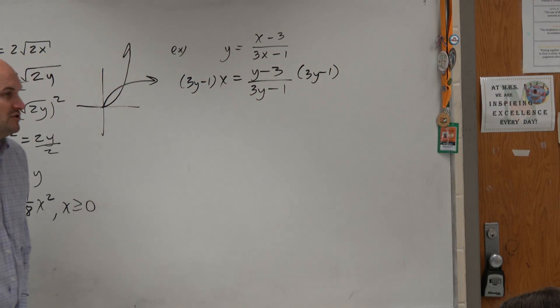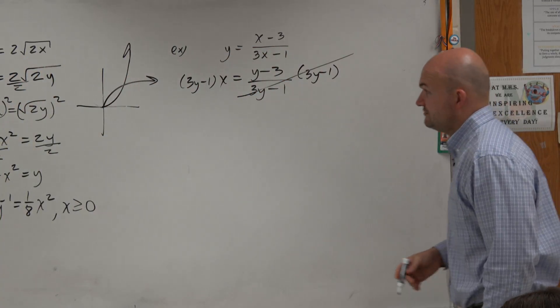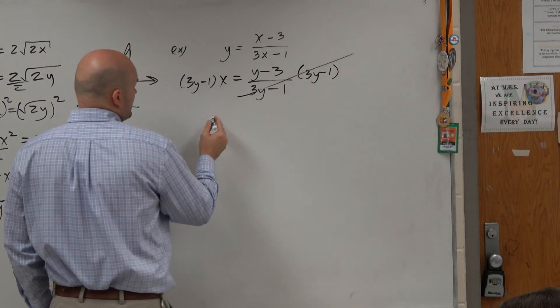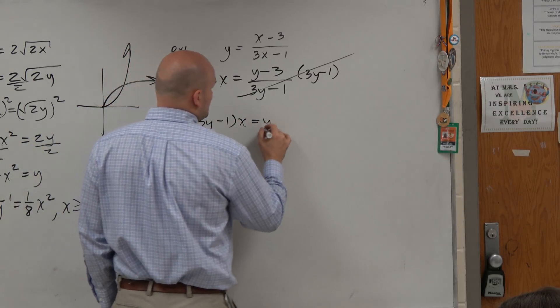Since you're multiplying the same thing on both sides, you're not changing the equations. Those divide to 1. And you're left with 3y minus 1 times x equals y minus 3.